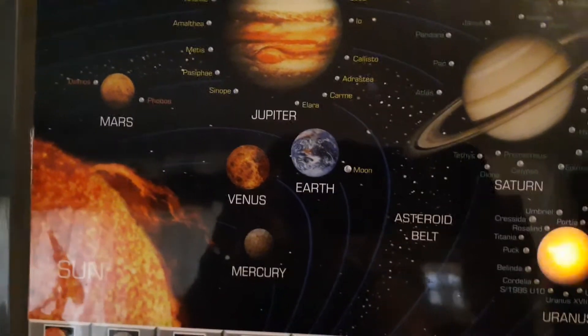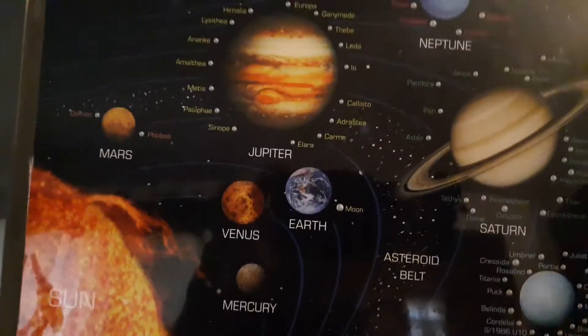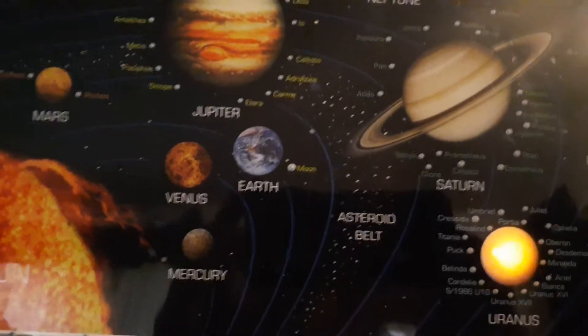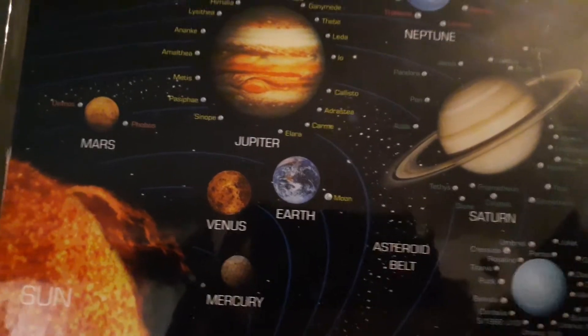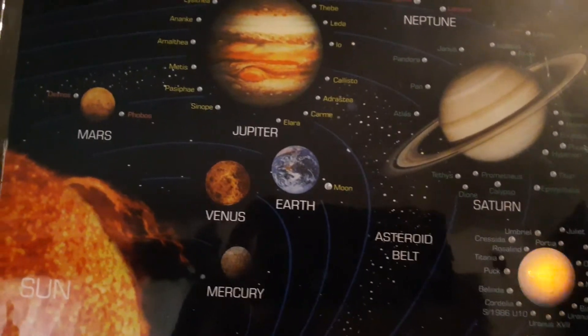The diameter of Uranus is approximately 32,000 miles. Uranus was discovered in 1781.